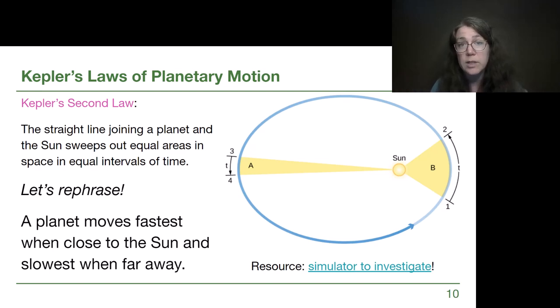we are going very fast when we're near the sun and we're going very slow when we're far from the sun. So that's what we want to rephrase and add to our notes for Kepler's second law. Kepler's second law is also trying to tell us that a planet moves fastest when it is close to the sun and it moves slowest when it is farther away.